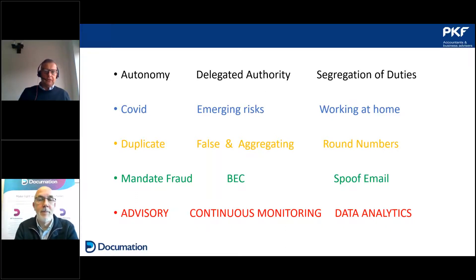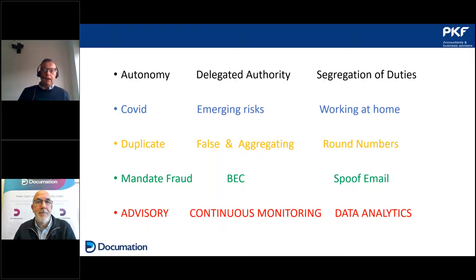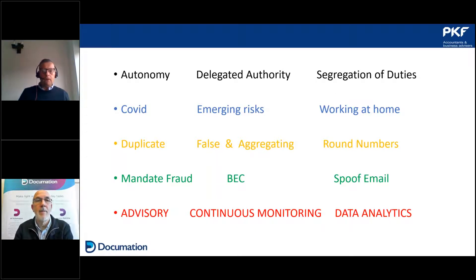He still had £250,000 in that account when he was arrested — it was ego: 'I warned you three times, you did nothing.' He served three years at Her Majesty's pleasure. It shows how easy it can be when we take our foot off the pedal. In COVID, with people furloughed or made redundant, we must ensure we still have the same chain of command — delegated authority, segregation of duties. How often do we go back to our delegated authority lists and ensure people have the right levels and right segregation of duties?